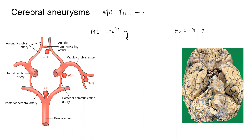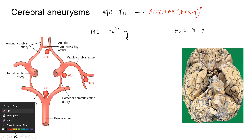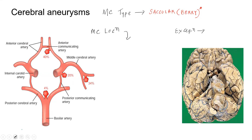The first question is: what is the most common type of cerebral aneurysm? The most common type is the saccular aneurysm, otherwise known as the berry aneurysm. However, there is an exception regarding the basilar artery. If they ask what is the most common type of aneurysm in the basilar artery, the answer is fusiform.